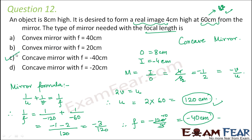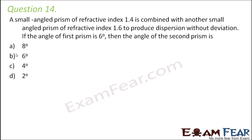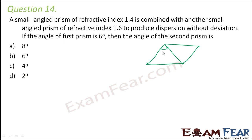Question number 14: a small-angled prism of refractive index 1.4 is combined with another small-angled prism of refractive index 1.6 to produce dispersion without deviation. The two prisms are arranged together so there is no net deviation. The angle of the first prism is 6 degrees; we have to find the angle of the second prism.